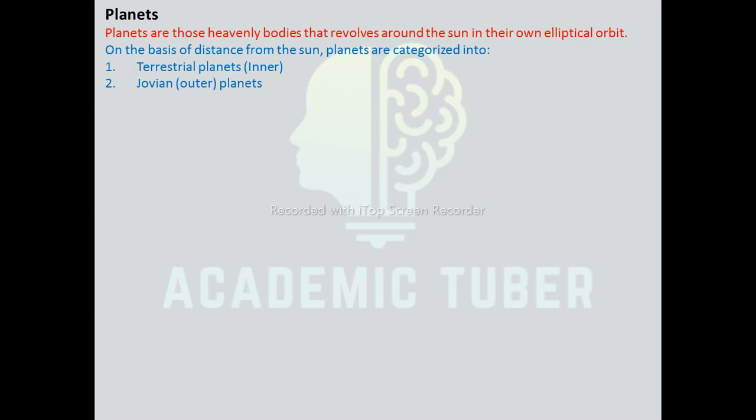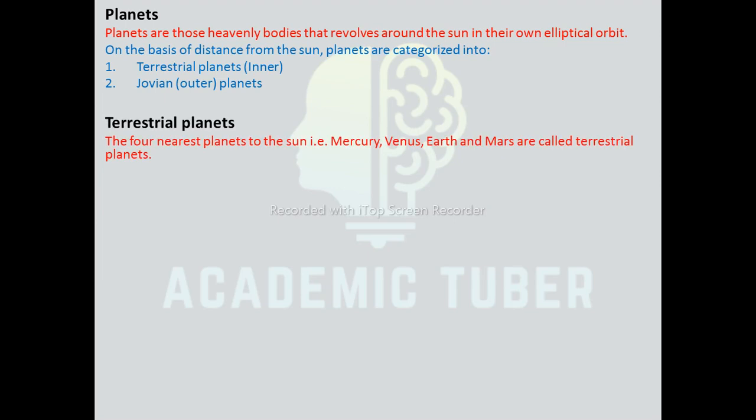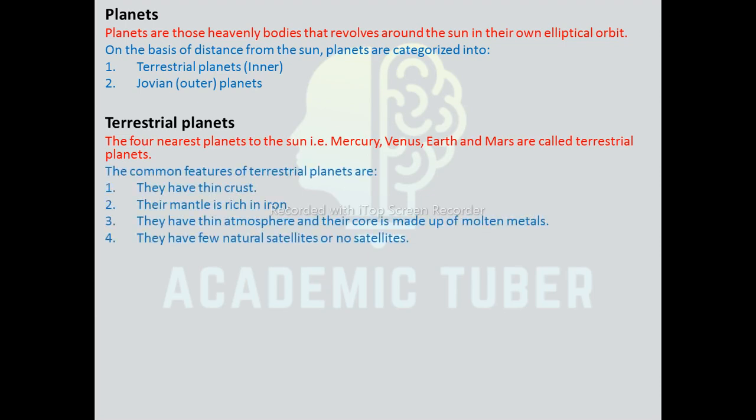On the basis of distance from the Sun, planets are categorized into two types: terrestrial planets, also known as inner planets, and Jovian planets, also known as outer planets. Those planets which lie inside the asteroid belt are called inner planets. The four nearest planets to the Sun — Mercury, Venus, Earth, and Mars — are known as terrestrial planets. Features of terrestrial planets: they have a thin crust, their mantle is rich in iron, they have a thin atmosphere, their core is made of molten metals, and they have few or no natural satellites.